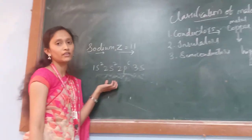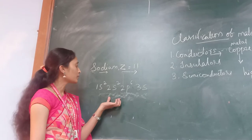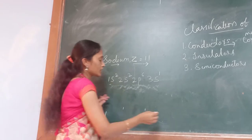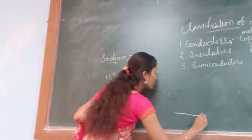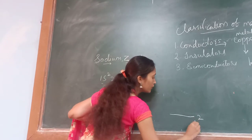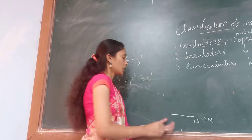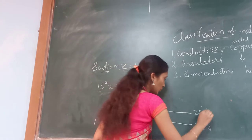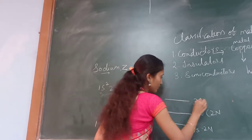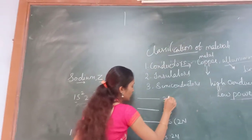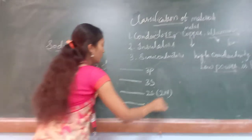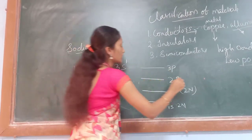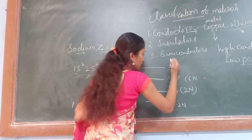We can see the quantum states here. For 1s, there are 2 quantum states; for 2s, 2 number; for 2p, 6 number; and for 3s, only 1 electron. Here in the third orbit there is only one electron, which means it is a free electron.